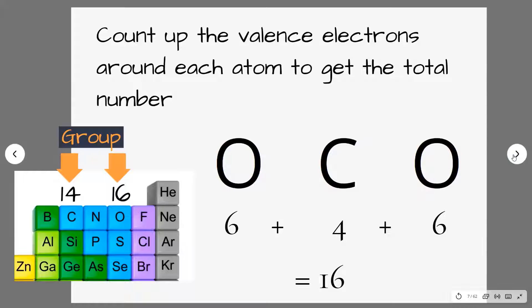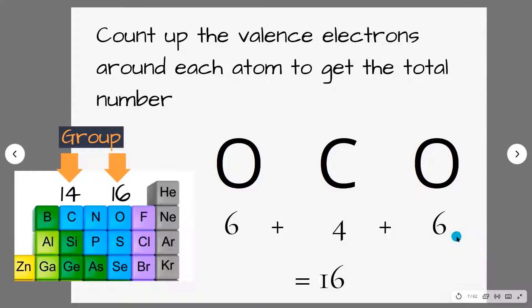We also need to know how many valence electrons there are in total, and that just involves counting them up. We have one carbon and two oxygens in carbon dioxide. Each oxygen has six valence electrons and the carbon has four, so we have 16 valence electrons in total.